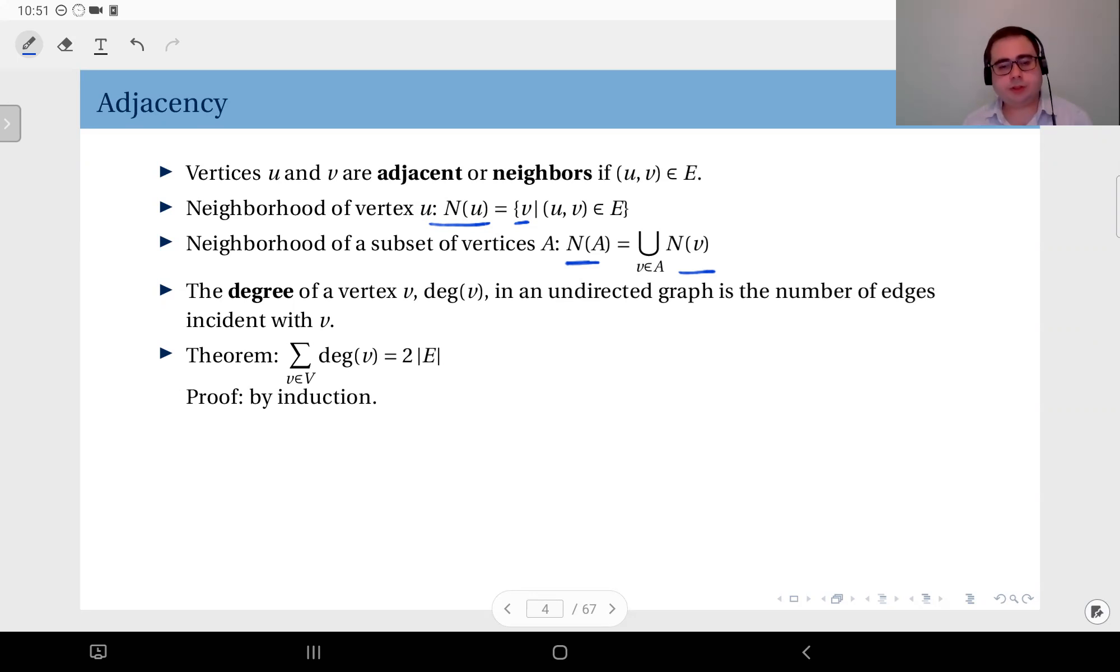Then we have the concept of degree of a vertex v, denoted deg(v), especially in an undirected graph. This is the number of edges incident with the vertex v. We have a theorem regarding the degree of the vertices in a graph: if you add up all the degrees of the vertices in the graph you obtain two times the number of edges. This can be simply proven by induction.